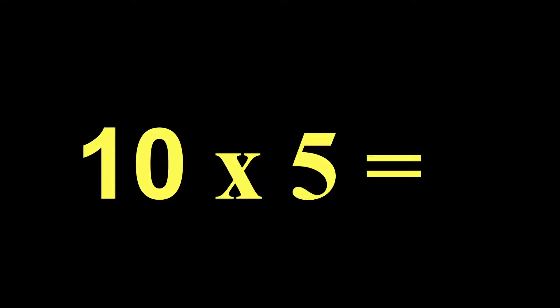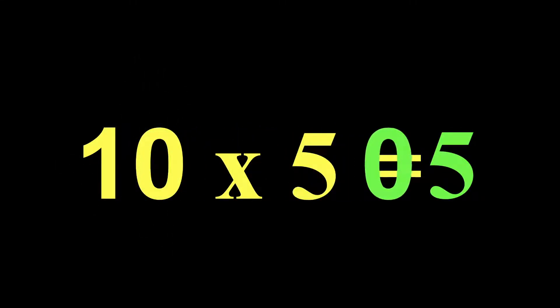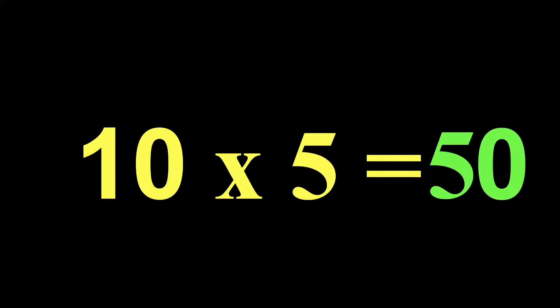10 times 5 — we are going to use our 10 rule. So we take the 5. Are we done? No, we are going to add a 0. So 10 times 5 is 50.